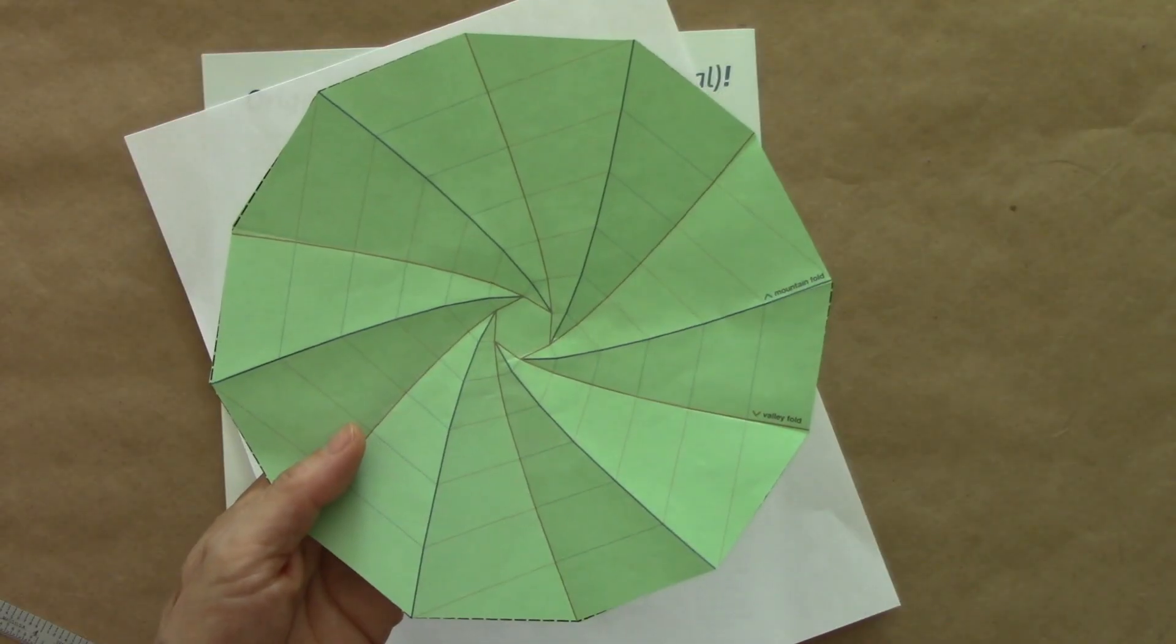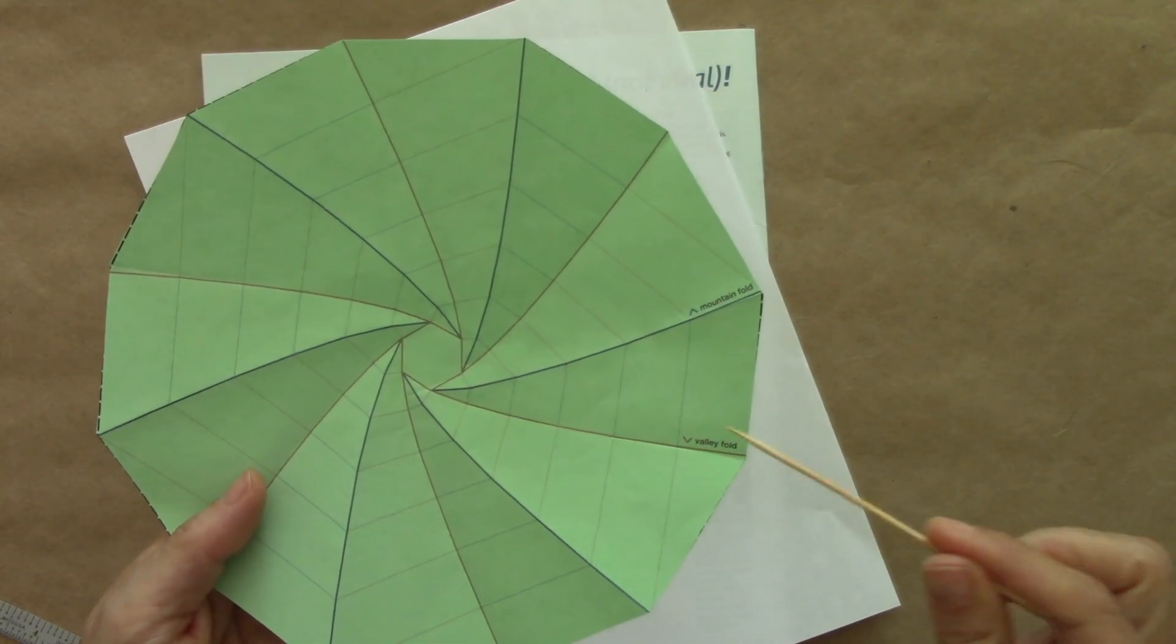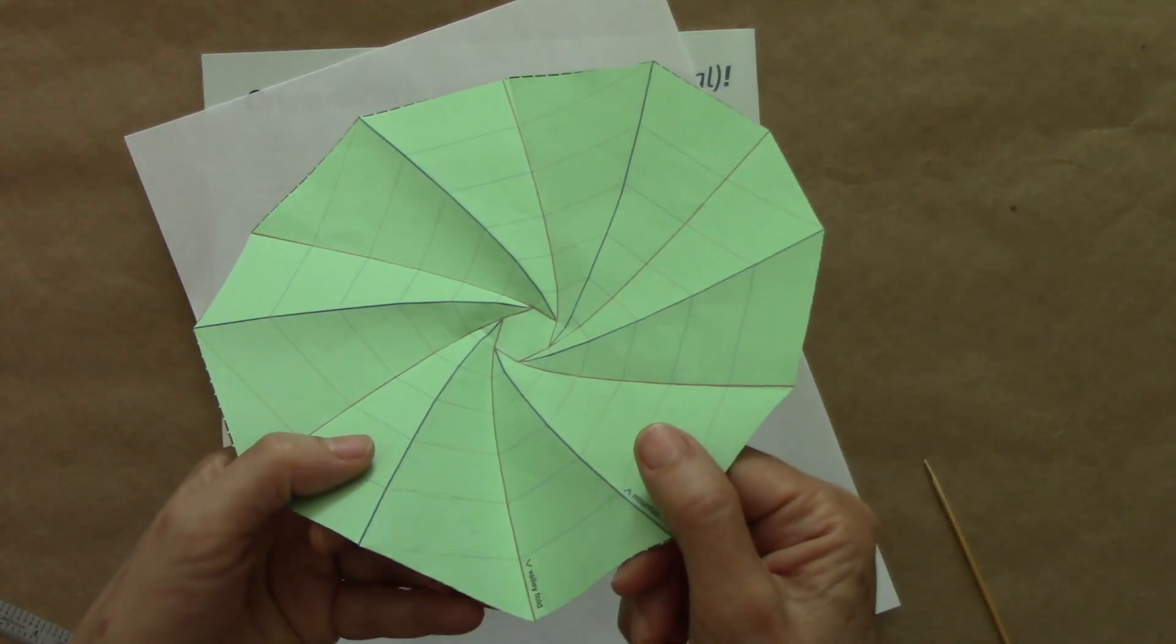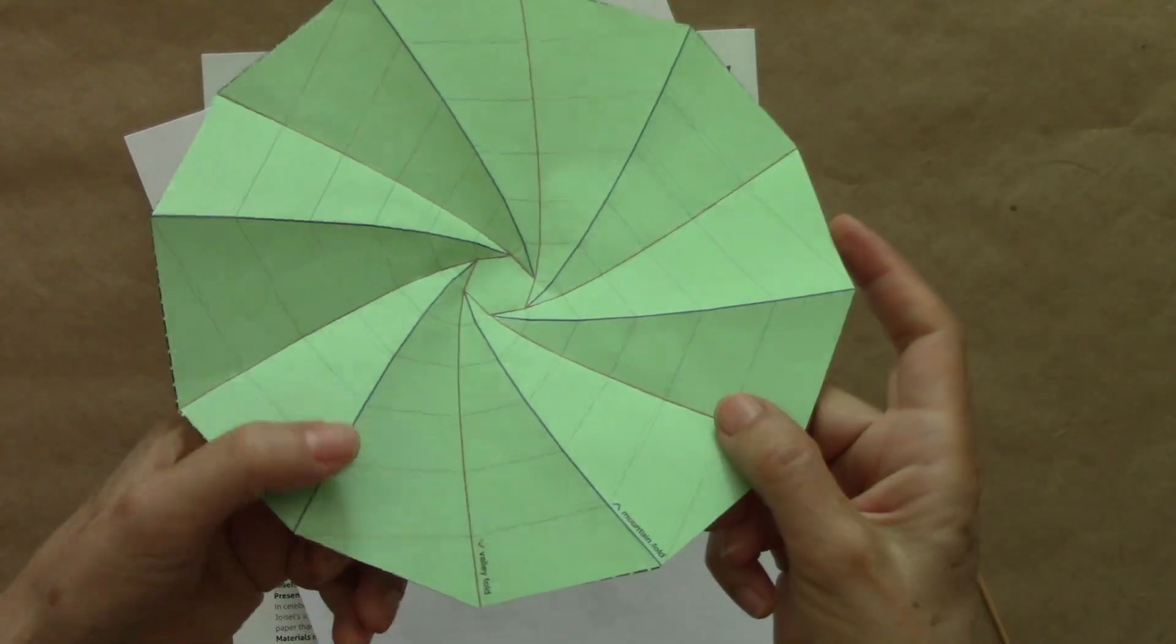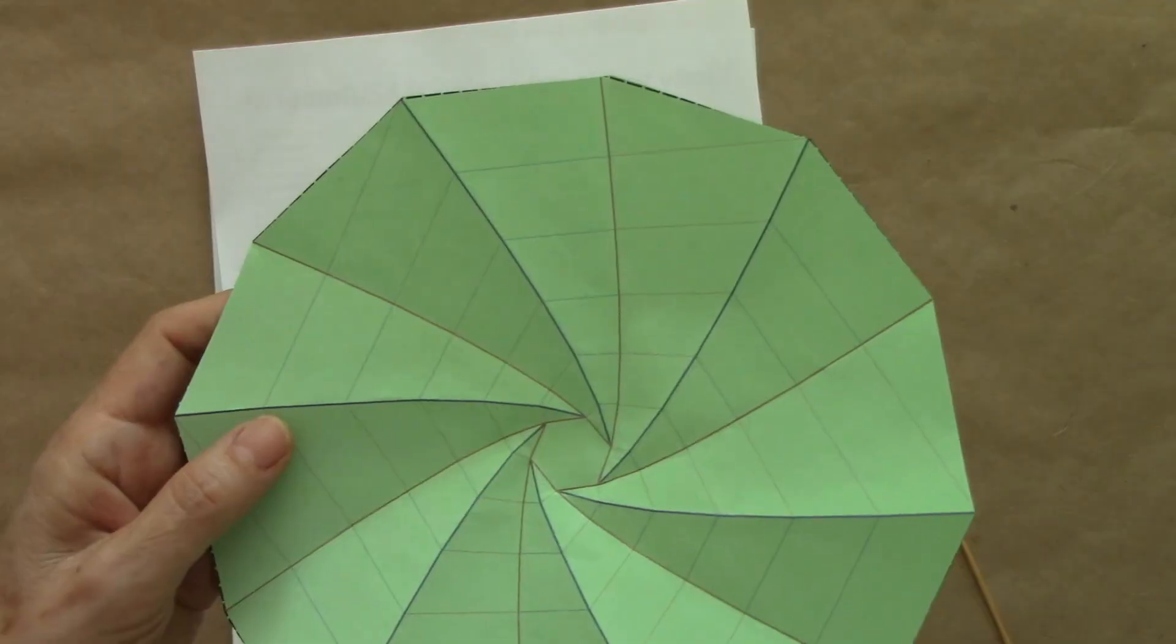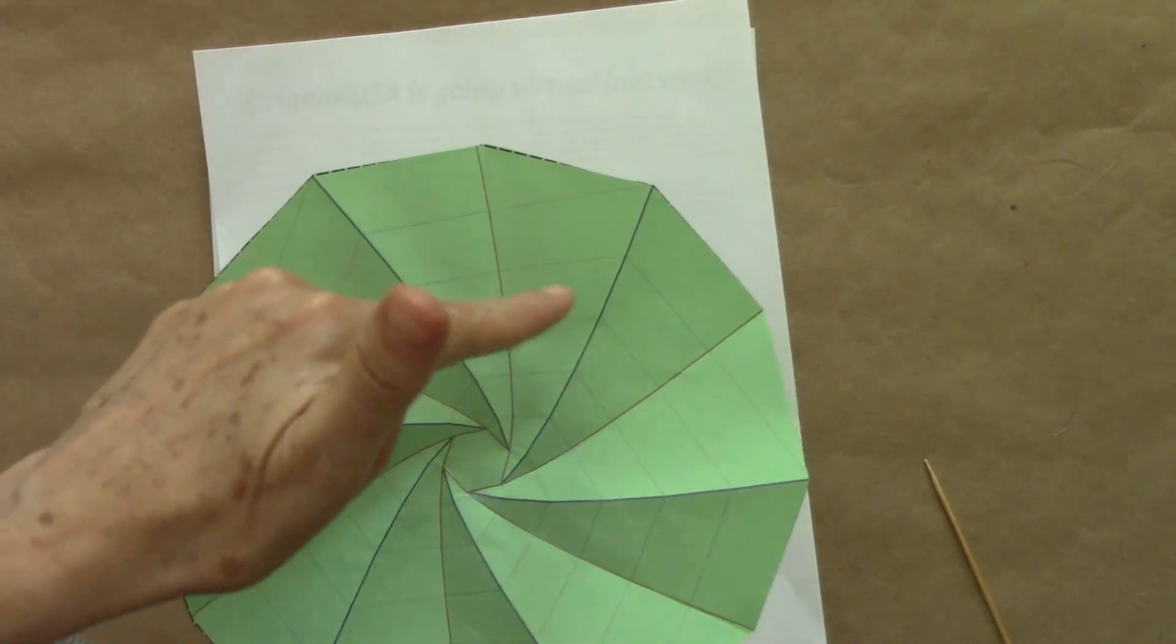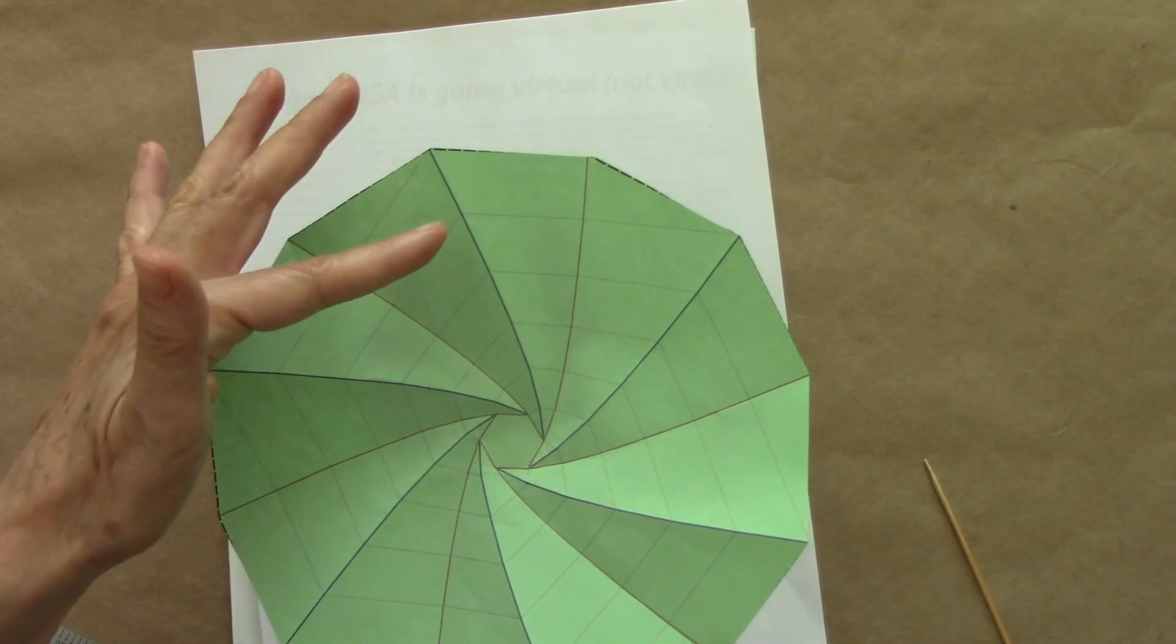If we have this side of the paper up, these are valley folds, these are mountain folds. We have a series of radial lines here. According to the instructions, it is not necessary to crease them.